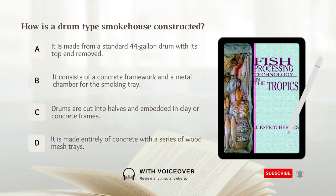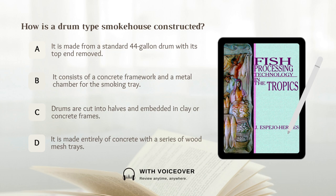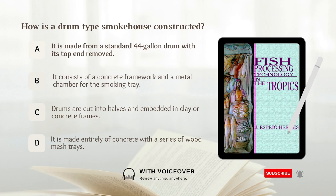How is a drum type smokehouse constructed? A. It is made from a standard 44-gallon drum with its top end removed. B. It consists of a concrete framework and a metal chamber for the smoking tray. C. Drums are cut into halves and embedded in clay or concrete frames. D. It is made entirely of concrete with a series of wood mesh trays. Answer: A. It is made from a standard 44-gallon drum with its top end removed.